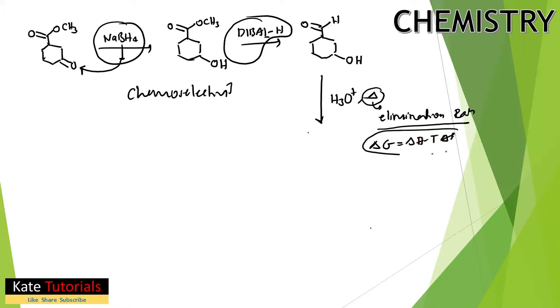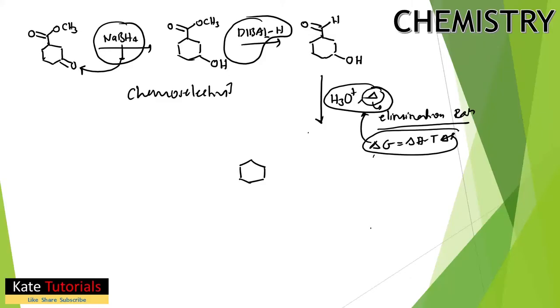Elimination follows thermodynamic principles where ΔG = ΔH − TΔS, and the importance of heating will be explained when covering E1/E2 elimination reactions. Here, H+ attacks the lone pair on the alcohol oxygen (electron-rich), converting it to OH2+, which is a good leaving group.